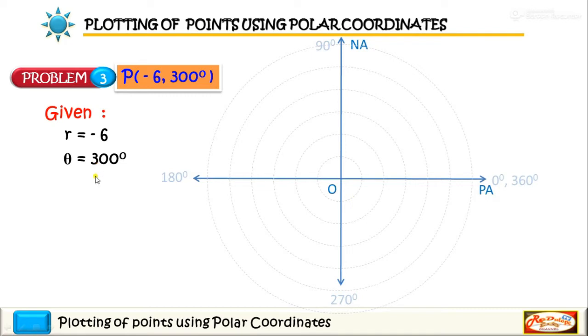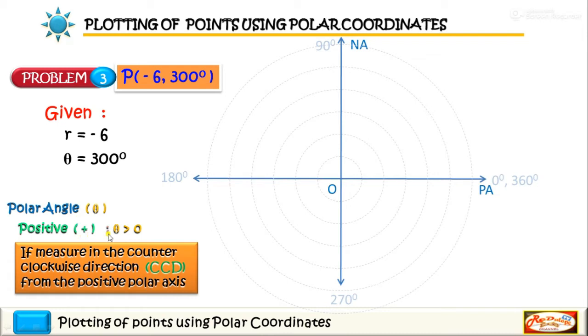Now since theta is 300 degrees and happens to be positive and that is greater than zero, we will measure the 300 degrees in a counterclockwise direction from the positive polar axis. Okay, so we have this as the 300 degrees and we draw a line here.